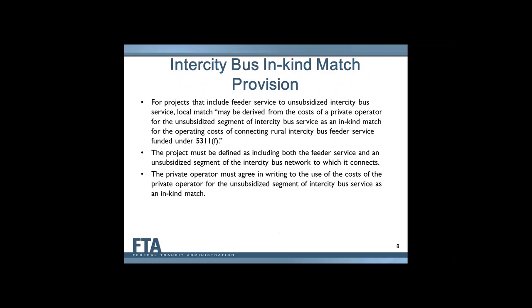The in-kind match provision allows a state to use its intercity funding to fund an extension of an existing intercity route, or a feeder service to that route. They can then use the cost of the original route as the match, which reduces or eliminates the need for the state or the subrecipient to come up with a match. A certain intercity bus line might be extended to serve a rural area, and that extension would be the feeder service to the unsubsidized bus service.